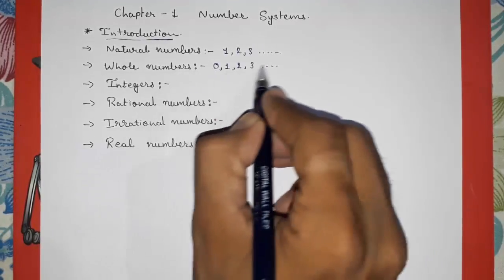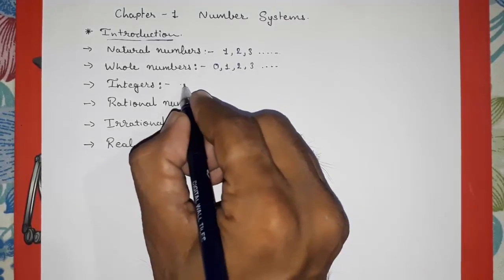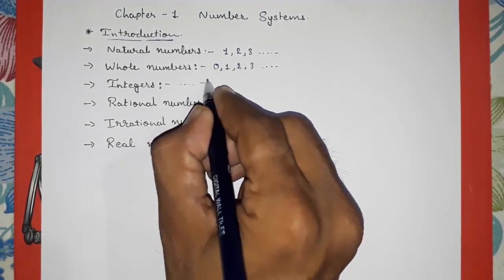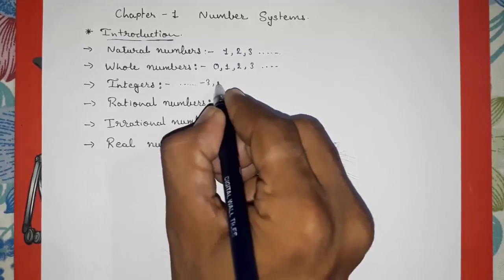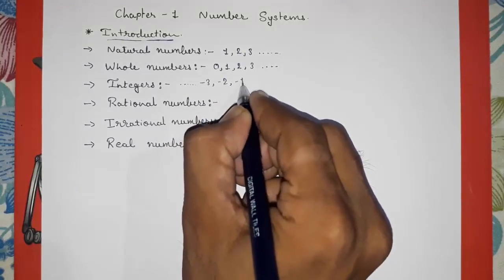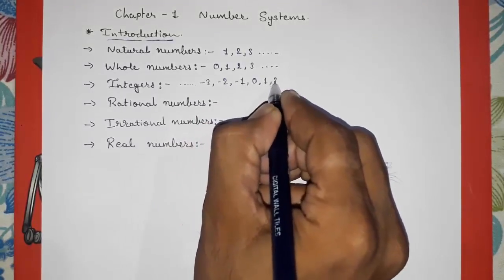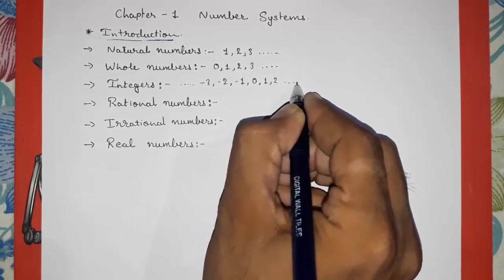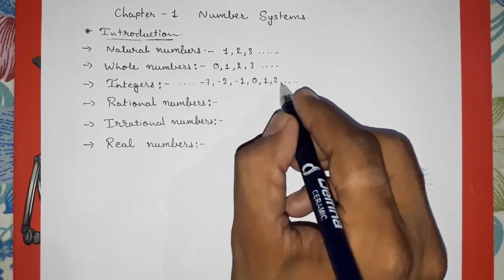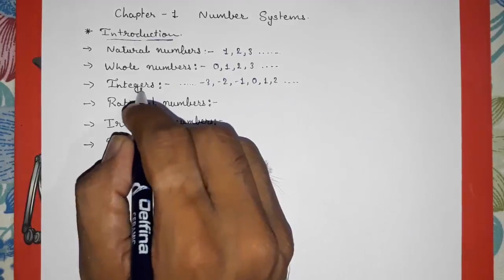Now, integers: if we add negative numbers to whole numbers, then we get numbers starting from negative infinity — minus 3, minus 2, minus 1, 0, 1, 2 up to infinity. That means all positive numbers, negative numbers, and 0 together are called integers.